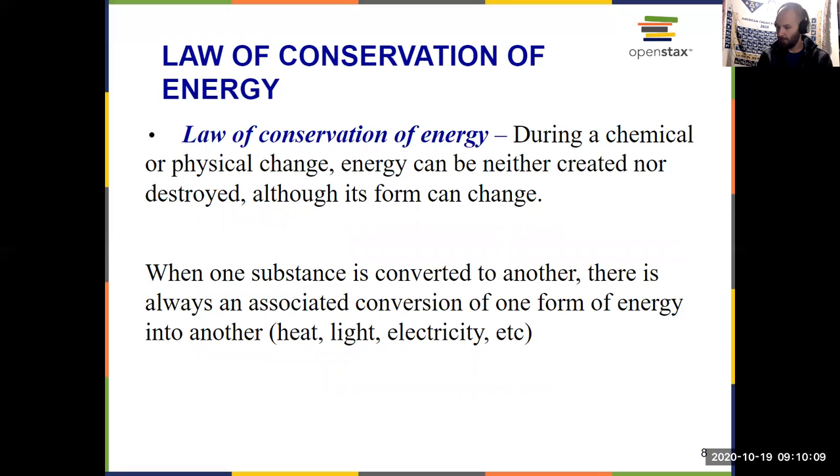So that gives us another law for Gen Chem 1. We had the law of conservation of matter before, and this is somewhat similar: law of conservation of energy, which tells us during a chemical or a physical change, energy can't be created or destroyed, but it can change form. Just like an atom can join a molecule, energy can change form between kinetic or potential, but it can't just disappear or spontaneously be created. And when substances are converted and we're undergoing a chemical reaction, there's always some sort of conversion of energy into a different form. We see heat, light, electricity, all involved in chemical reactions.